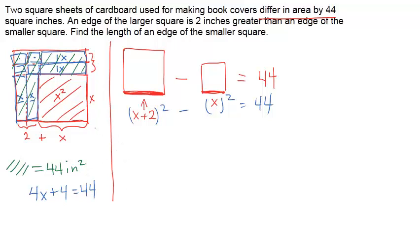that this square here is actually the large square. We're taking x plus 2 times x plus 2. So that's actually x plus 2 squared.